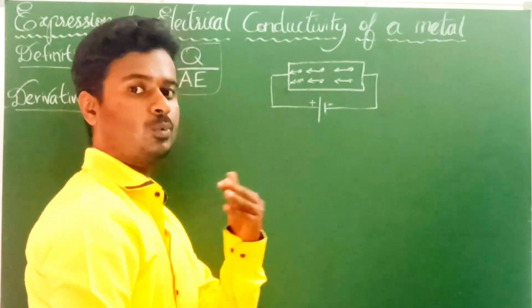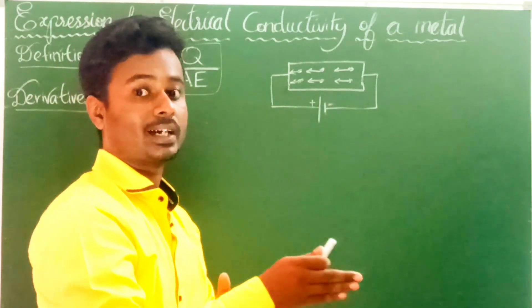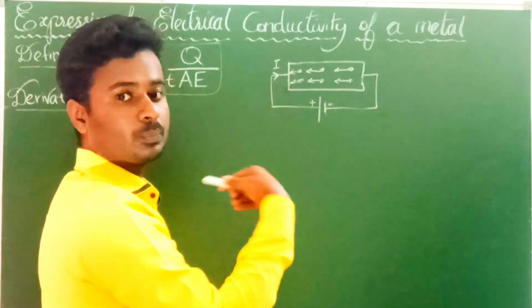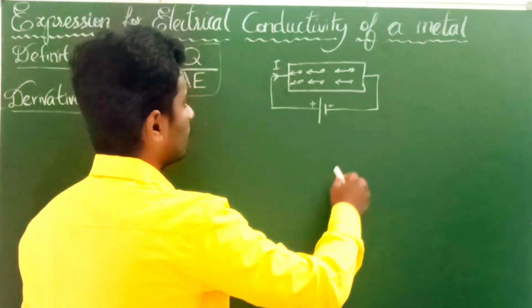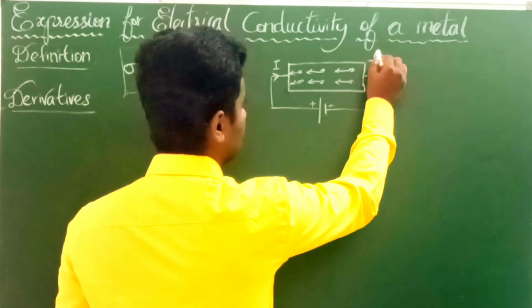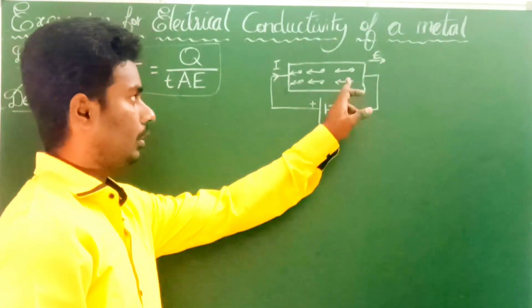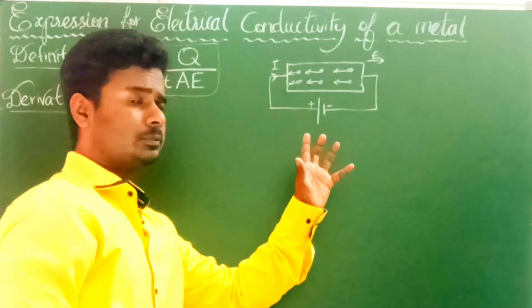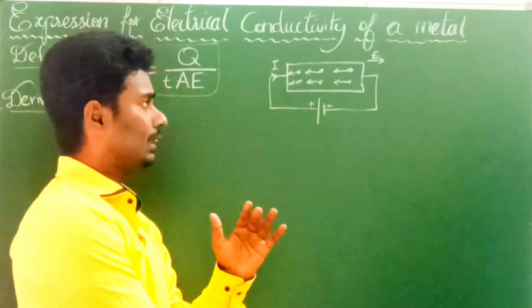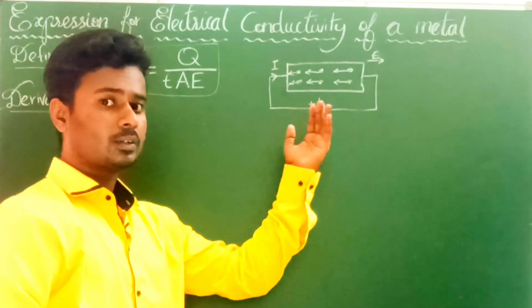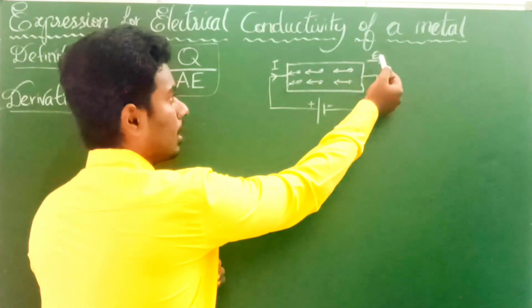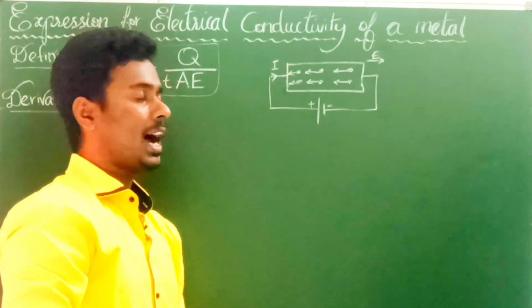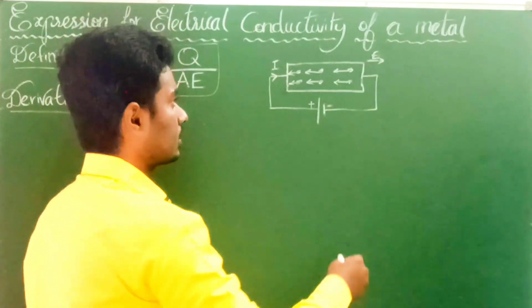Electron movement is opposite to current movement. That's why current moves like this — in one direction. The electrical field moves like this, and electrons move in the opposite direction. The velocity at which electrons move is called drift velocity.